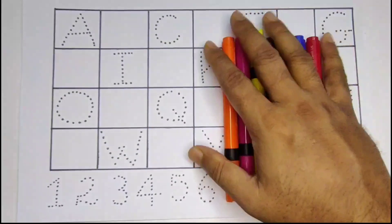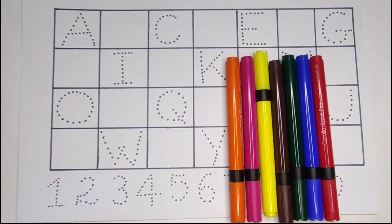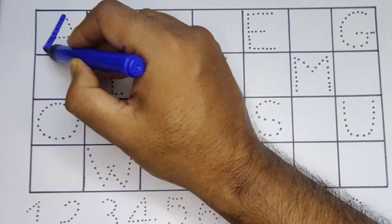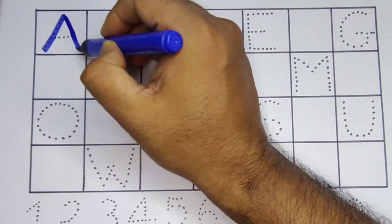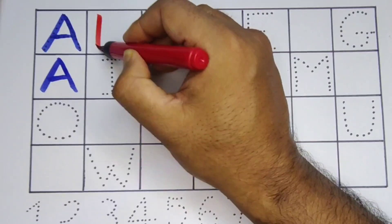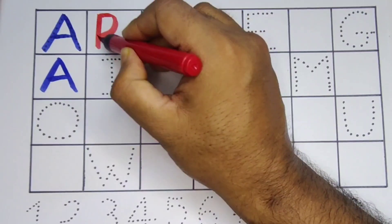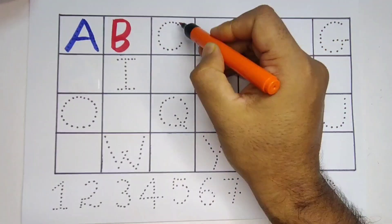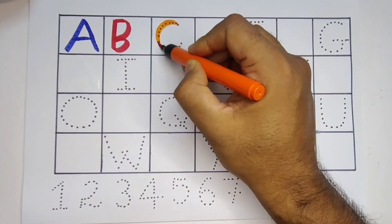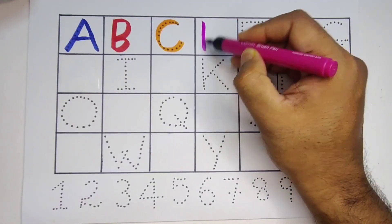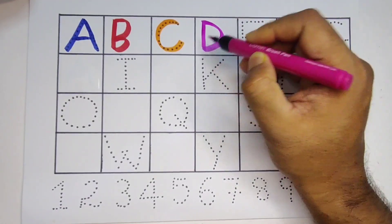Now let's learn the alphabet. A, B, C, D. Blue color, A, A for ant. Red color, B, B for bag. Orange color, C, C for car. Pink color, D, D for drum.